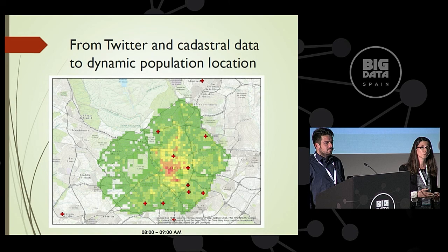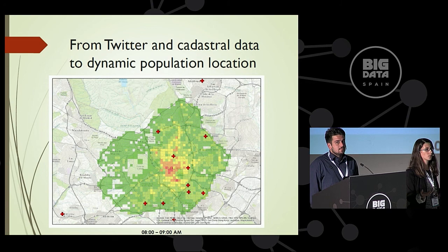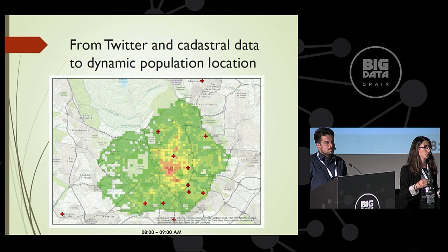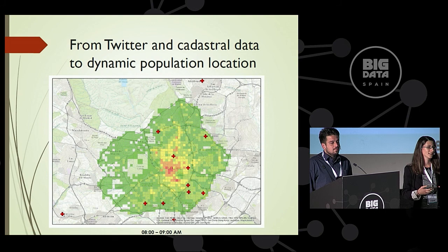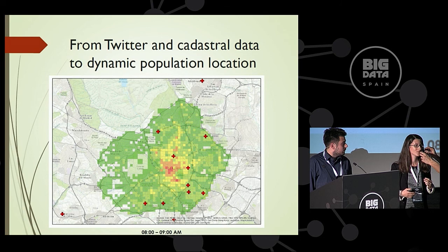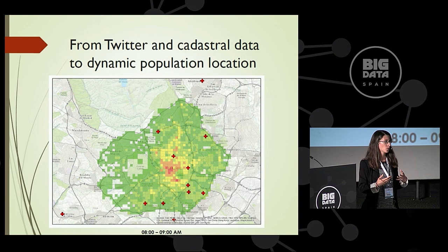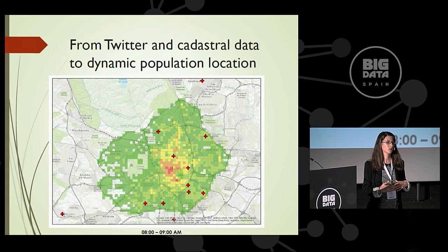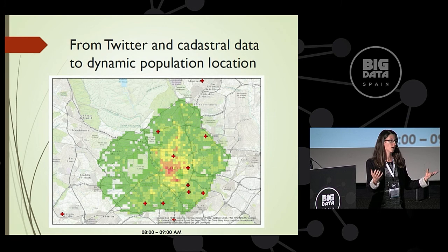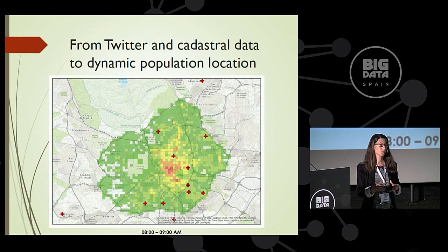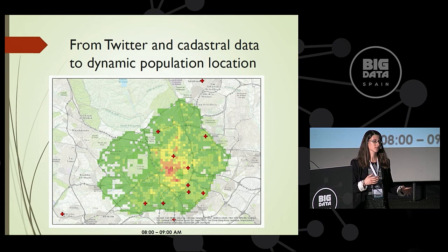We compare that with cadastral information, so we can know the places of work — where are the offices, the educational centers, where we have commerce. But in addition to that, we want to know the intensity of use. With geolocated tweets, we made an approach to know what the intensity of use is during the day in different parts of the city. It's not only that we know where the offices are, but we need to know if it's a very large one with many people, or if it's a place mainly used only during the morning. Of course we know about some drawbacks of this approach, but by combining several databases, we can have quite a good proxy.